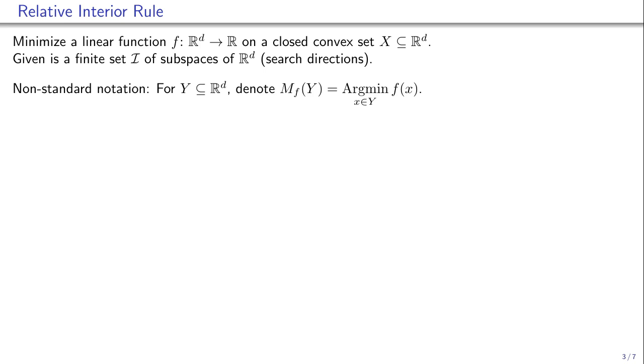We are given a finite set I of subspaces representing allowed search directions. Having a feasible point x_n, the update of the method finds a new point x_{n+1} by choosing a minimizer of f on the restriction of the set X to one such subspace translated to x_n.